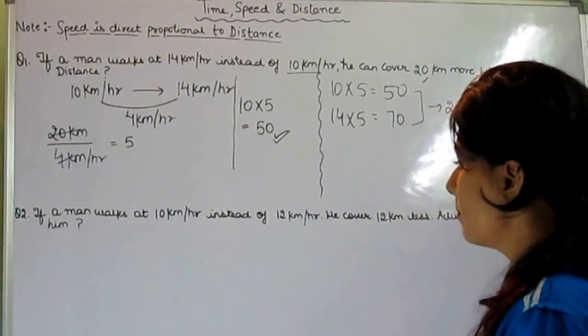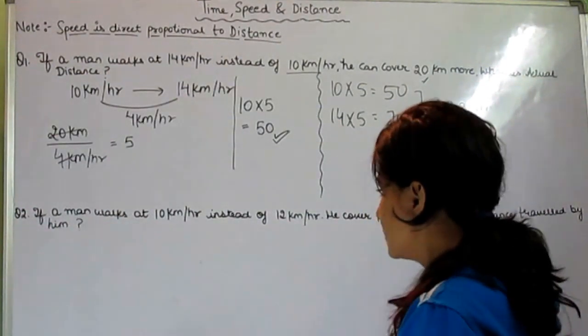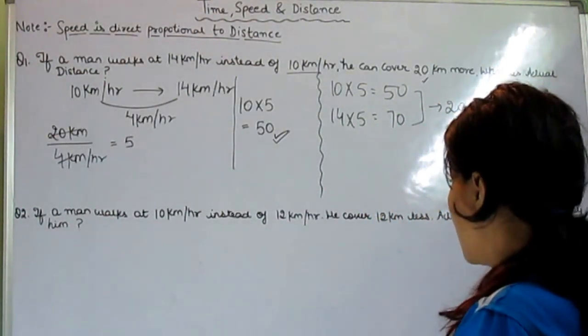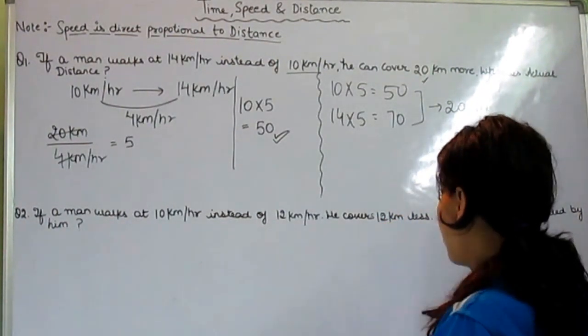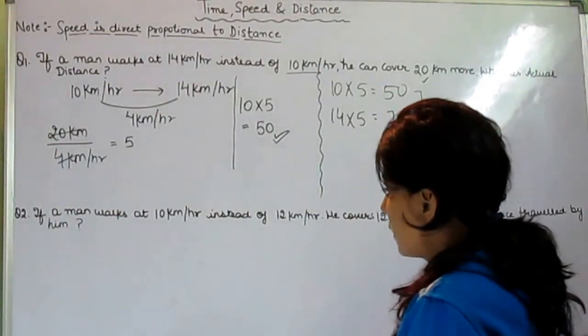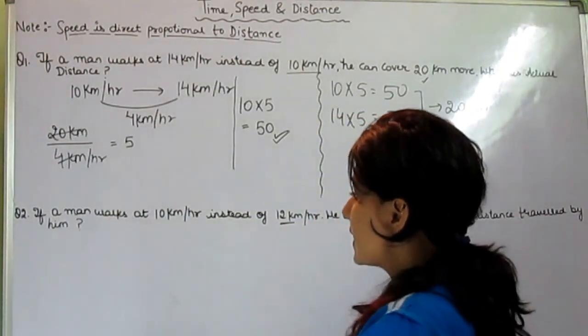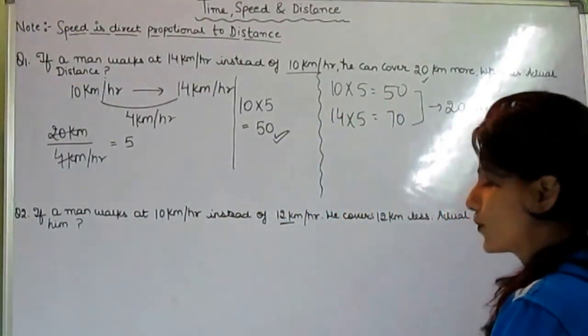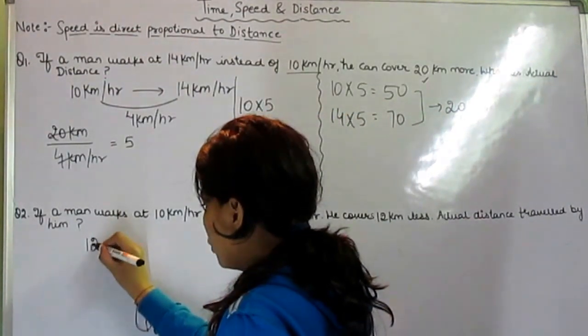Let's have the second question. If a man walks at the speed of 10 km per hour instead of 12 km per hour, he covers 12 km less. What is the actual distance traveled by him? This is the actual speed. If a man walks at 10 km per hour instead of 12 km per hour, it means he usually walks with the speed of 12 km per hour.